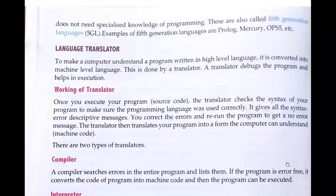I hope you have understood the programming languages. We discussed 1GL, 2GL, high-level languages, modern languages, and fifth generation languages. Now it's time to understand language translators. As we know, computers cannot understand human language, so we need a translator to convert our language into computer language — just like the assembler converts human language into machine language. To make a computer understand a program written in high-level language, it must be converted into machine-level language, because computers can only understand circuits — zeros and ones.